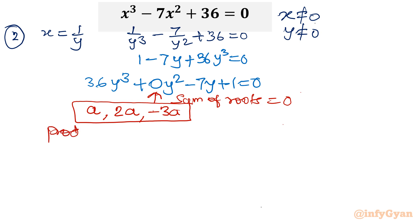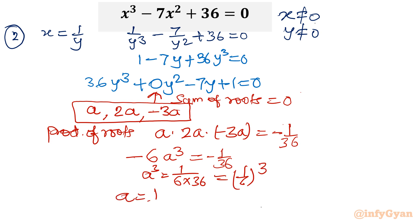Now I will apply the product of roots formula. Product of roots is -1/36. So a × 2a × (-3a) = -1/36, which gives -6a³ = -1/36. a³ = 1/(6×36) = (1/6)³, so a = 1/6.